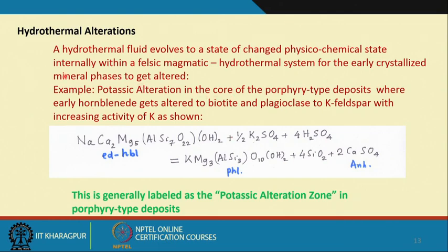Basically, in an evolving hydrothermal system, the fluid evolves such that early-formed mineral assemblages come out of equilibrium with the changed chemistry of the fluid. An example is potassic alteration in the core of porphyry-type deposits, where early hornblende gets altered to biotite and plagioclase to potash feldspar. This can be written by a simple reaction of addition of potassium: albite plus potassium gives rise to potash feldspar plus soda. This is very much controlled by the concentration ratios of sodium and potassium.